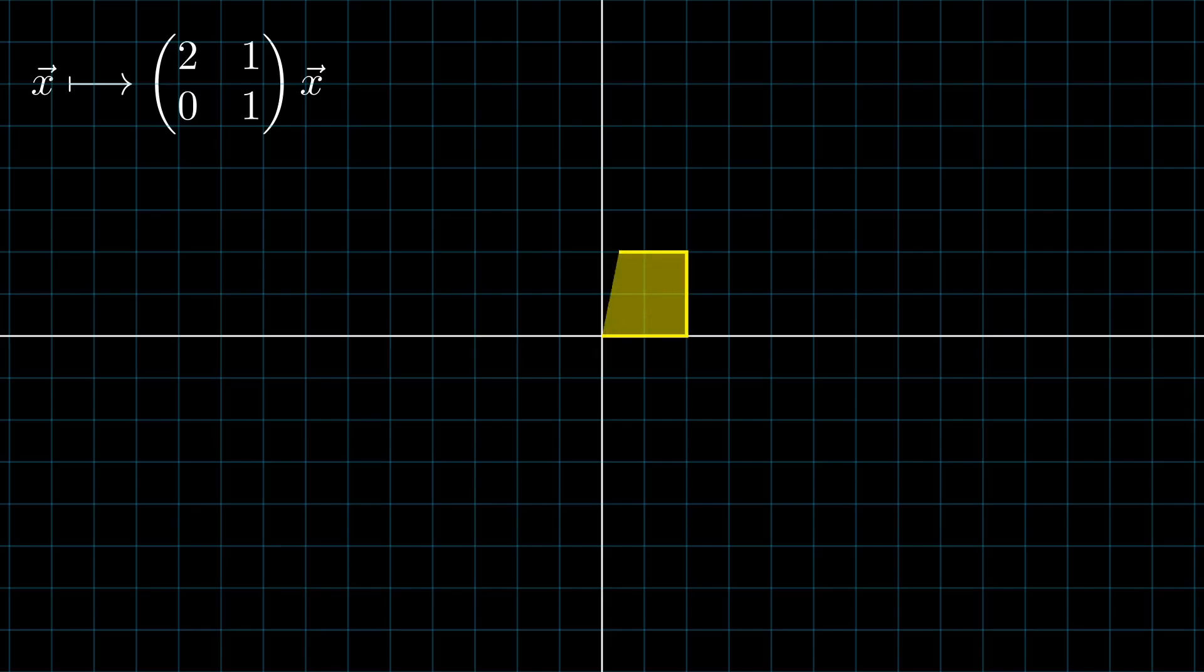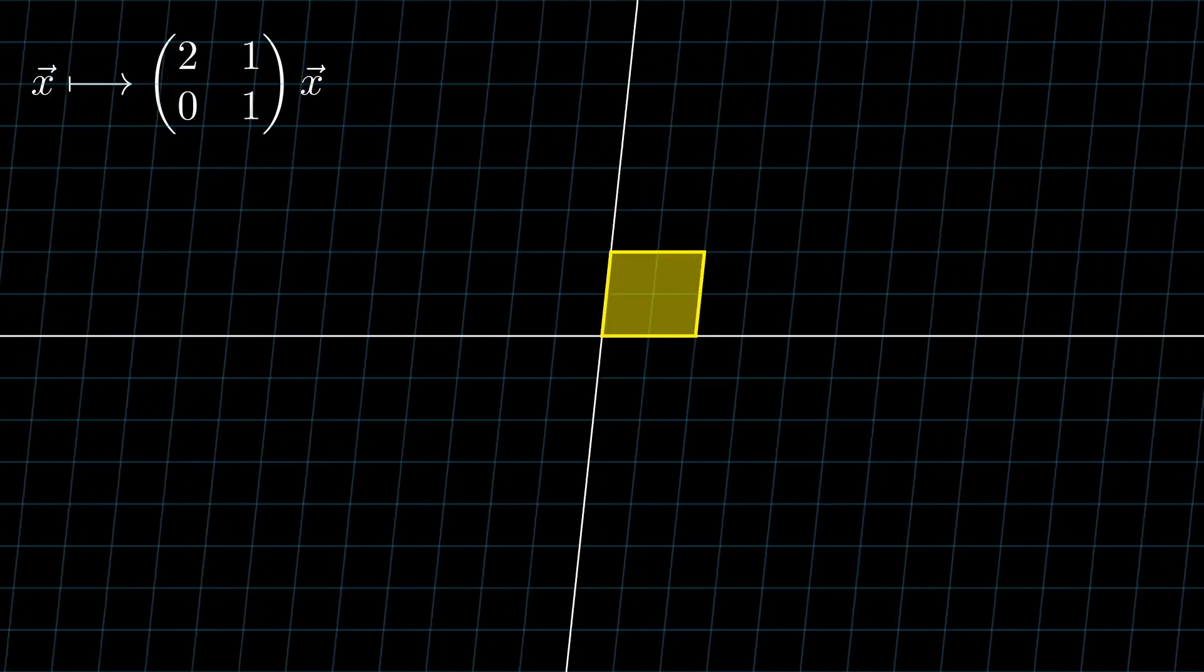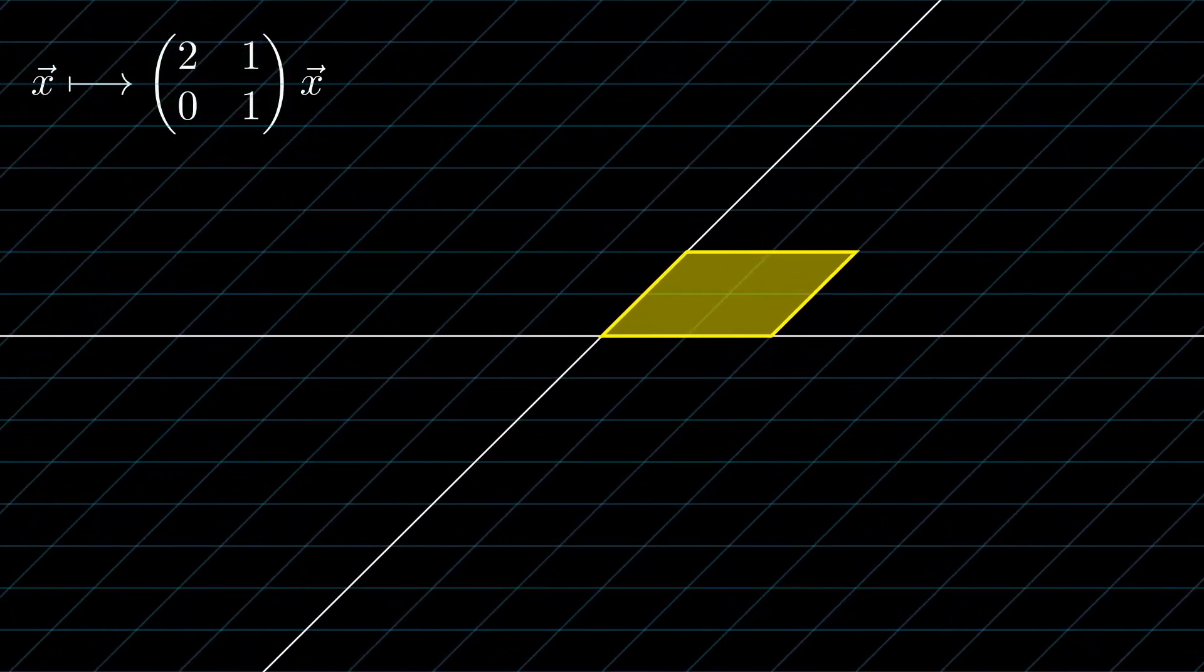So in this specific case, we can see the effect of the transformation on the square, which under the transformation just gets mapped to this parallelogram. And this would have happened if the square appeared elsewhere on the screen just as long as it was the same dimensions.